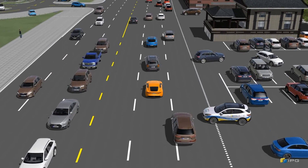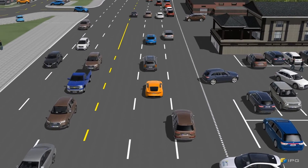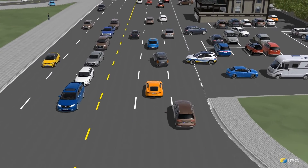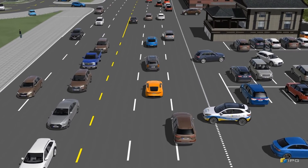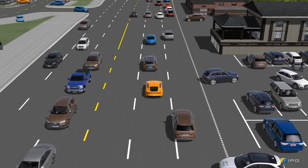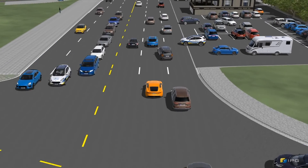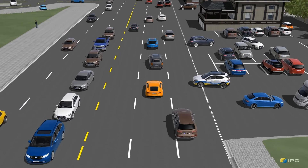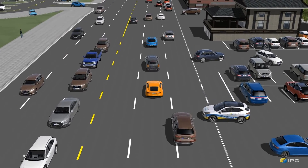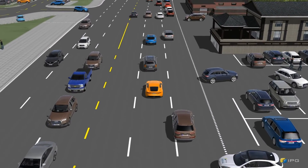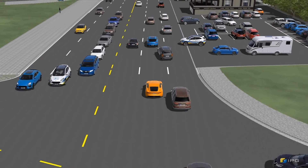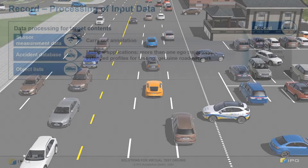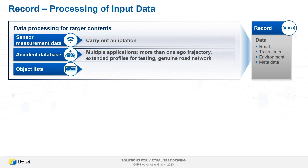Here you can see an example of what the scenario looks like in CarMaker. I would like to add that we did not take the detailed street information from annotations but from a separate import of HD maps.